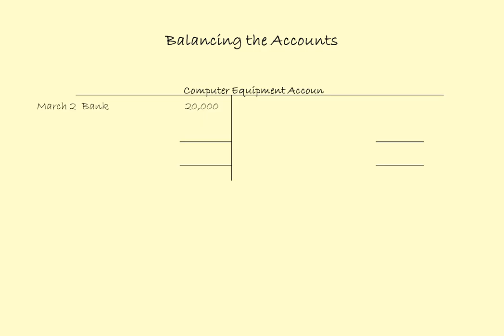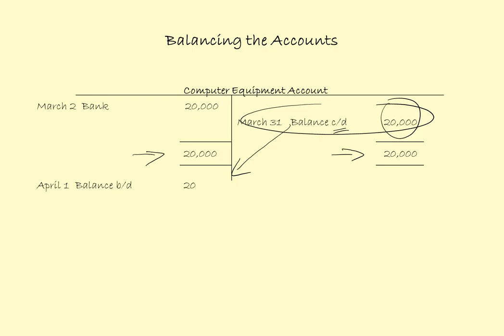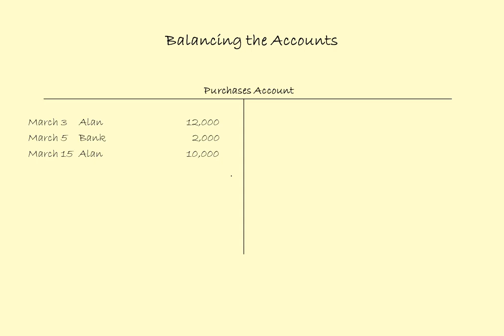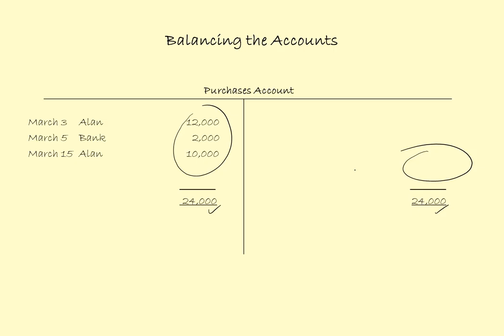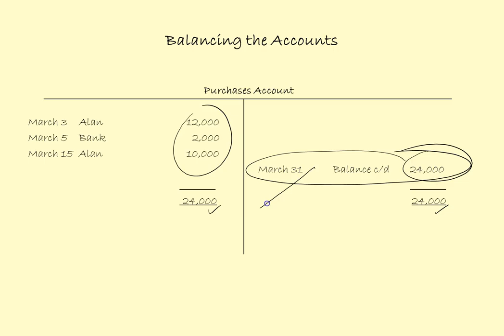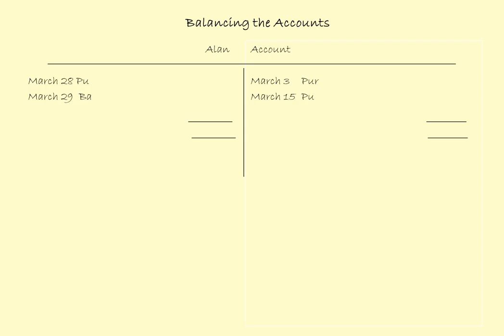Next account is computer equipment — only a single transaction. I put 20,000 in as the column totals on both sides, and the balancing figure is 20,000, balance carried down. I take this and bring it down onto the debit side: April the 1st, balance brought down, 20,000. Next we have purchases, with three transactions on the debit side totalling 24,000. I put 24,000 on both sides and the balance carried down of 24,000 is brought down onto the debit side: April the 1st, balance brought down, 24,000.